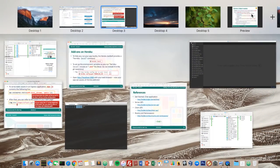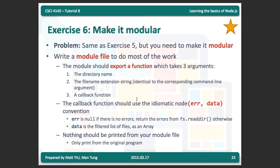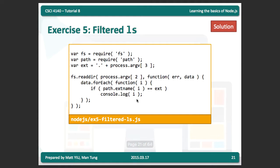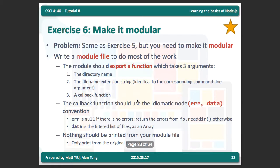In the last lesson we stopped here. We finished exercise 5, which is to write our filtered LS. In exercise 6 we are going to make a modular version of the filtered LS application. The requirement is exactly the same as exercise 5, but you need to make it modular. I will have a Node.js module to do the filter part, and then do the output in my application JavaScript — separating filter.js and my actual script file into two files.